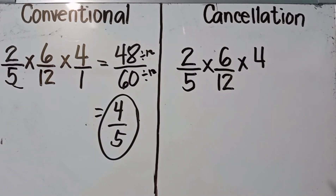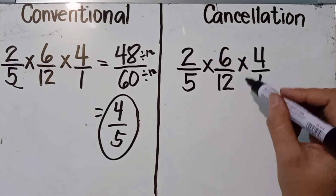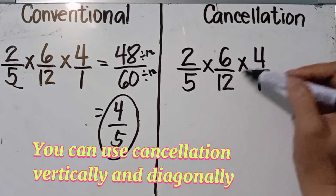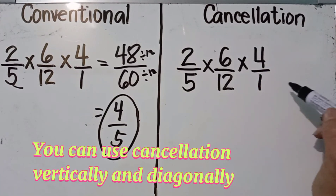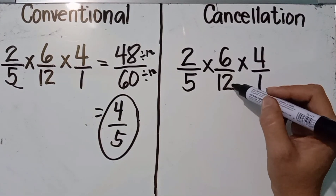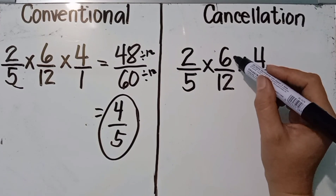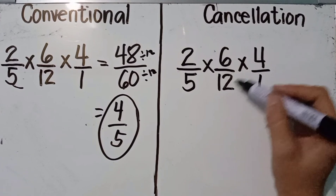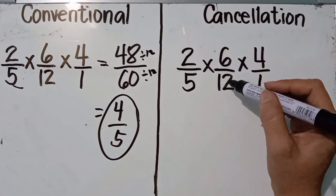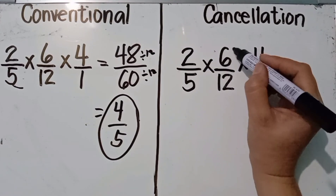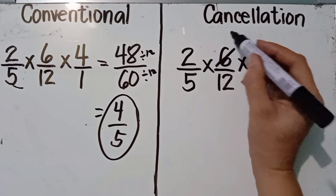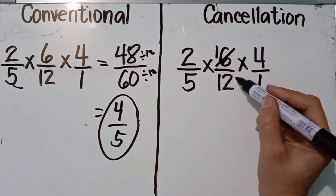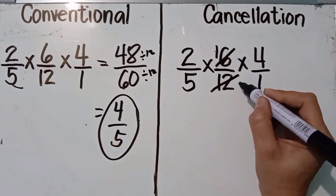Now using the cancellation method for two over five times six over twelve times four over one, we look for common factors vertically or diagonally. Six and twelve have a common factor of six: six divided by six is one, and twelve divided by six is two. Then two and two (from the remaining numbers) have a common factor of two: two divided by two is one, and two divided by two is one.